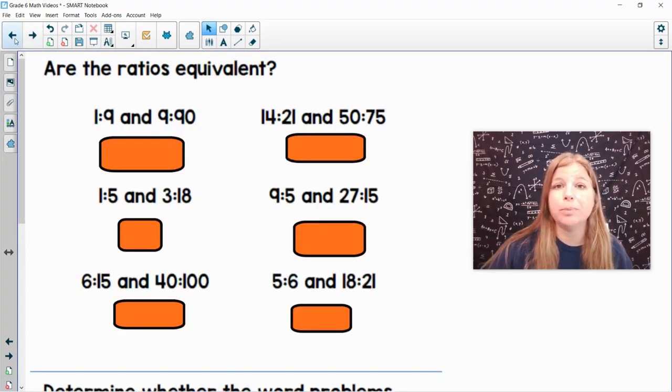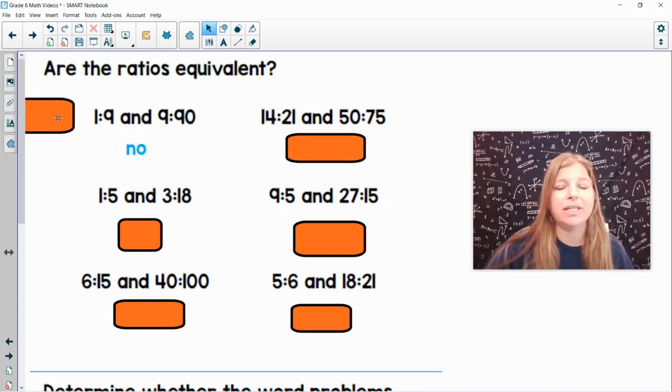So now let's take a look at some more practice. 1 to 9 and 9 to 90. 1 to 9 is simplified. 9 to 90, if I simplify them both by 9s, I would get 1 to 10. So the answer there is no.